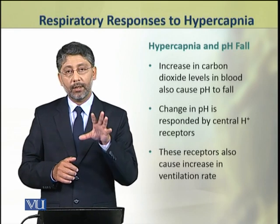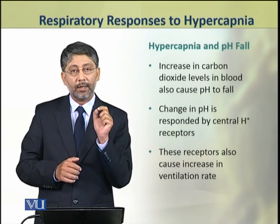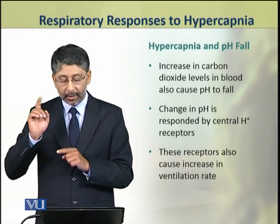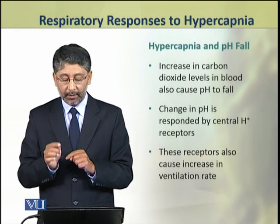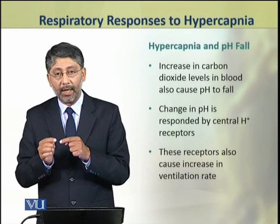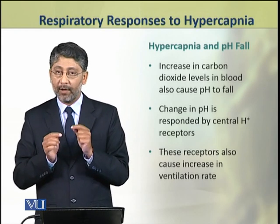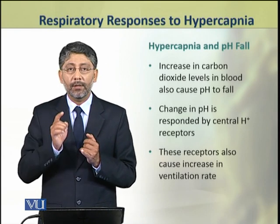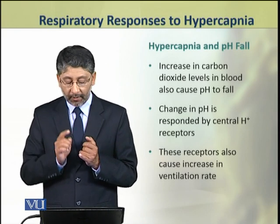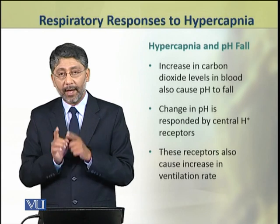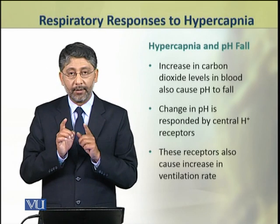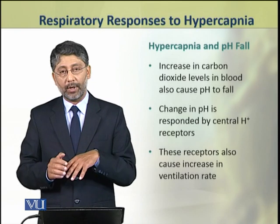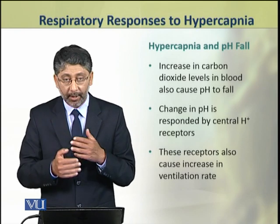The increase in the concentration of carbon dioxide in blood results in a fall of the pH level of the blood. The changes in pH level of blood are responded to by the central hydrogen ion receptors, which cause the ventilation rate to be increased.